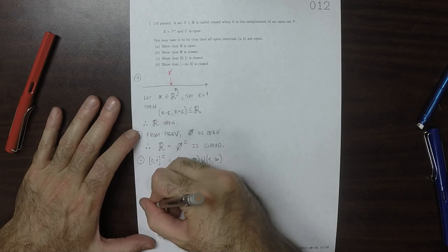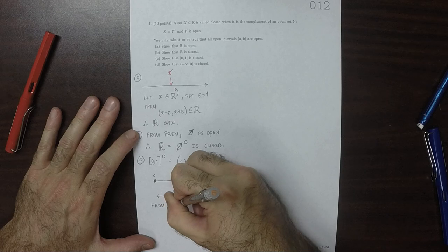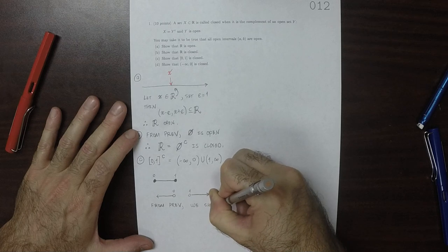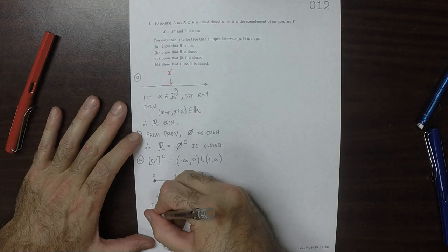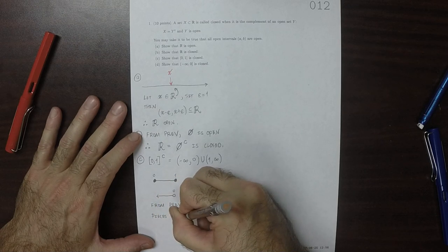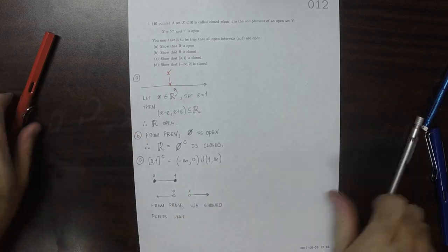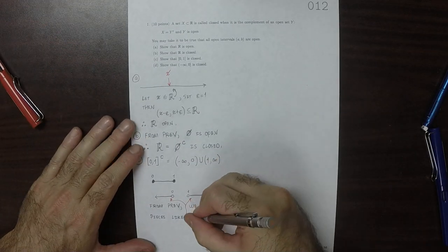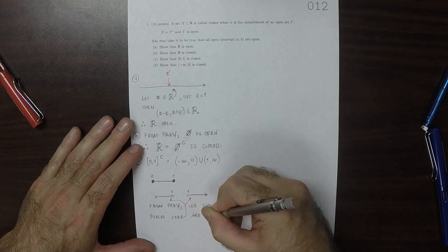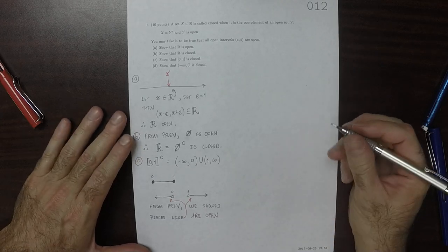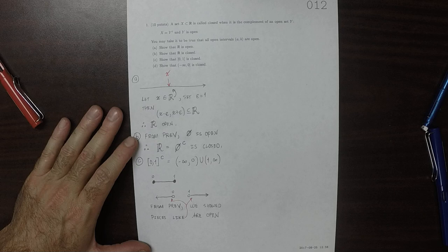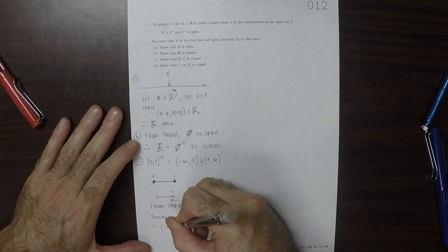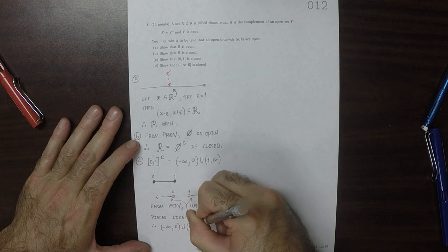And, from the previous exercise, we showed pieces like this are open. Therefore, the union is open because we could just process them one at a time. Therefore, negative infinity to 0, union, 1 to infinity, is open.